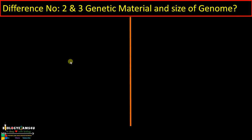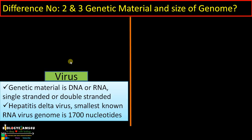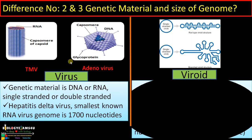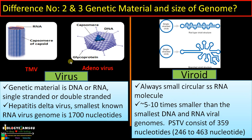Difference number two and three regard genetic material and size of genome. Genetic material in a virus is DNA or RNA; it can be single-stranded or double-stranded — there are RNA viruses and DNA viruses. But in the case of viroids, viroids are always small circular single-stranded RNA molecules.